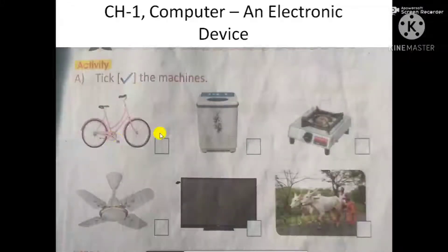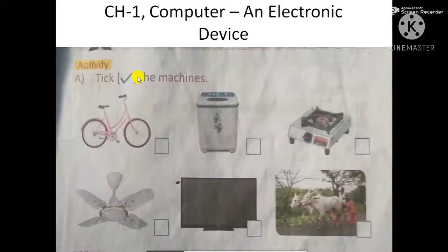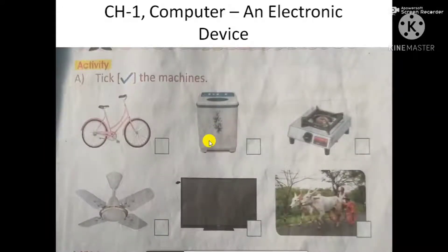What is a machine? A machine is a thing that makes our work easy. Here you have to tick the machine. Bicycle is also a machine. Washing machine is a machine, so you have to tick the machines.